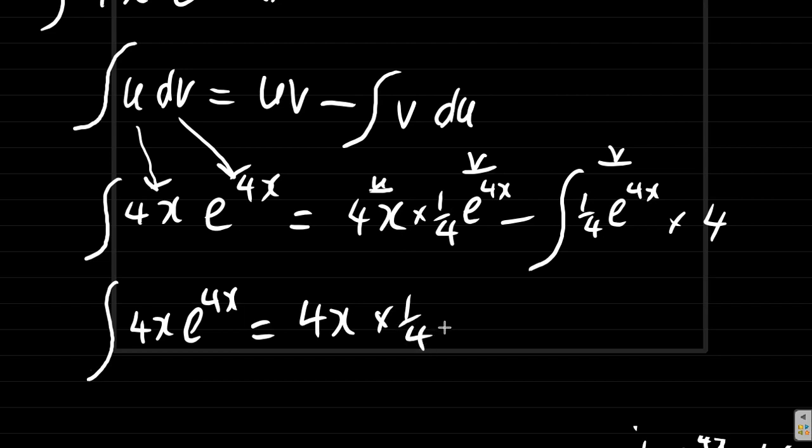The integral of 4x e to the 4x equals 4x times a quarter e to the 4x minus the integral of, now this quarter times 4 is 1, so it's minus integral of e to the 4x. See that?